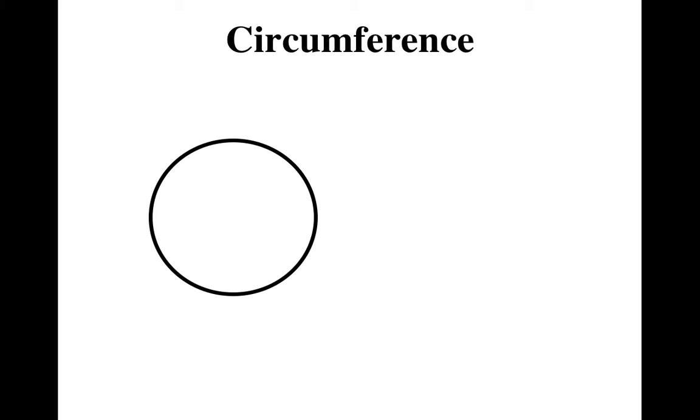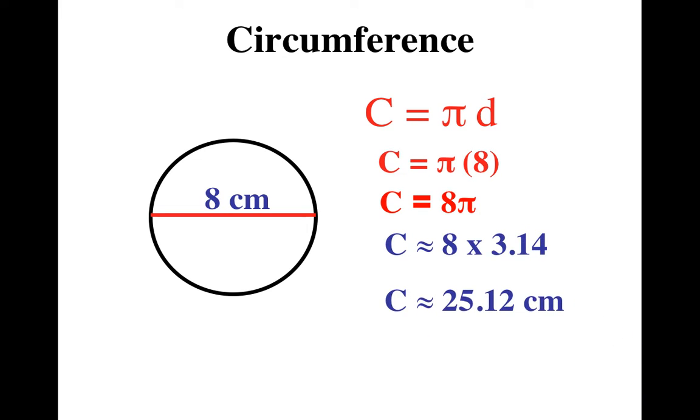So here we are, circumference. I'm giving you this. Give it a shot. There's the formula. OK, I'm back. Now we plug in 8, because that is the diameter. And of course, everyone knows 8 times 314 is 2512, or in this case, 25.12.